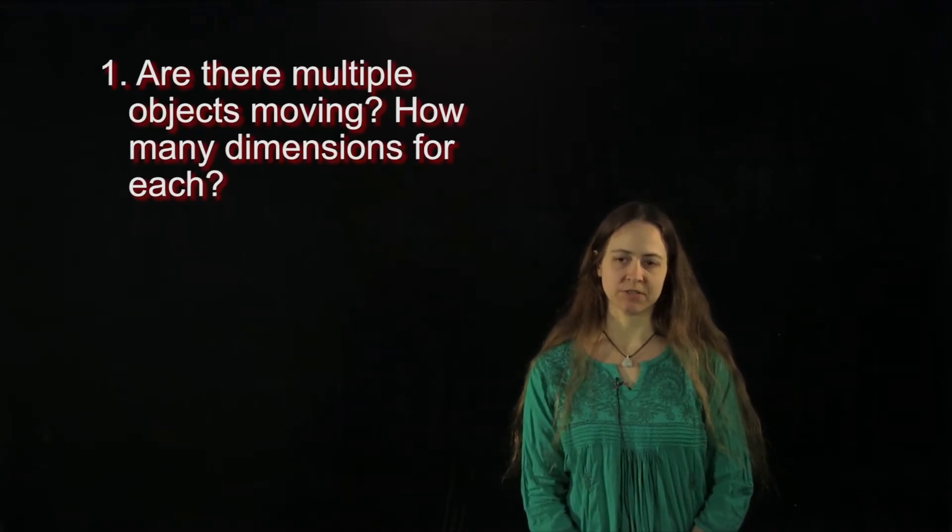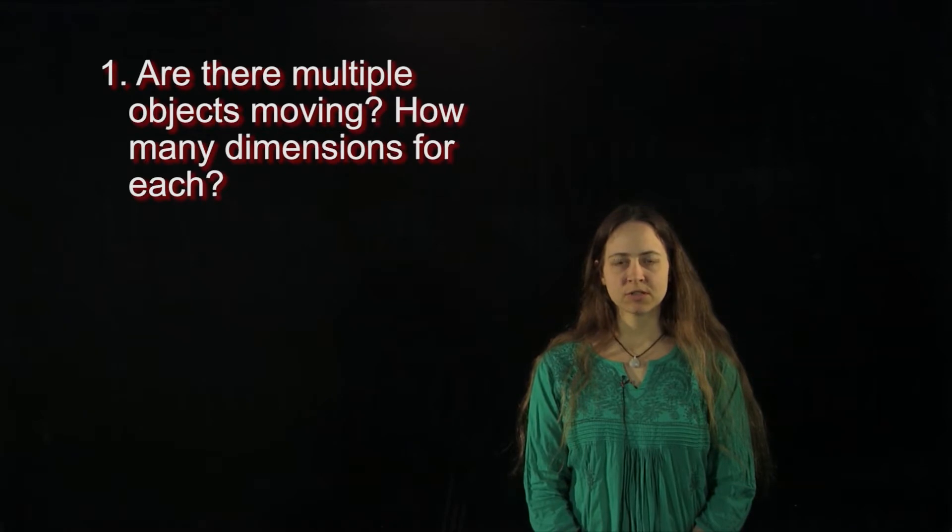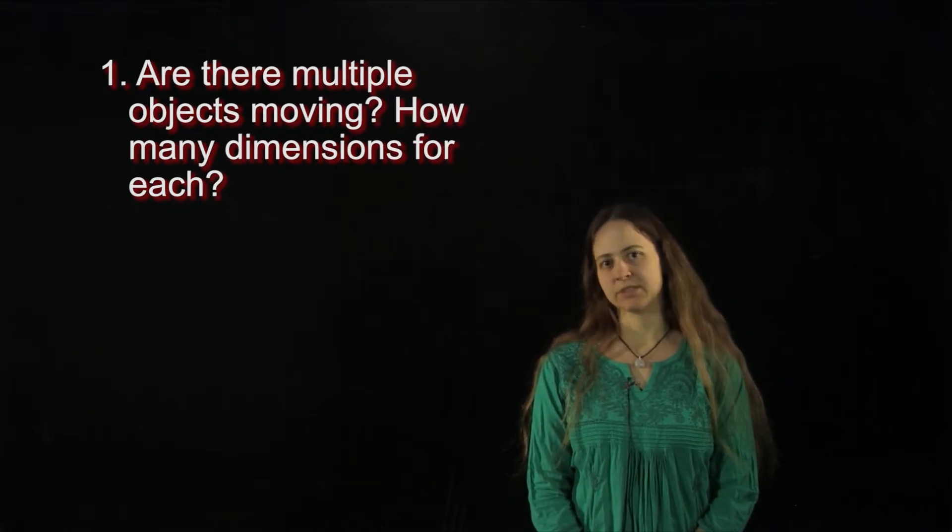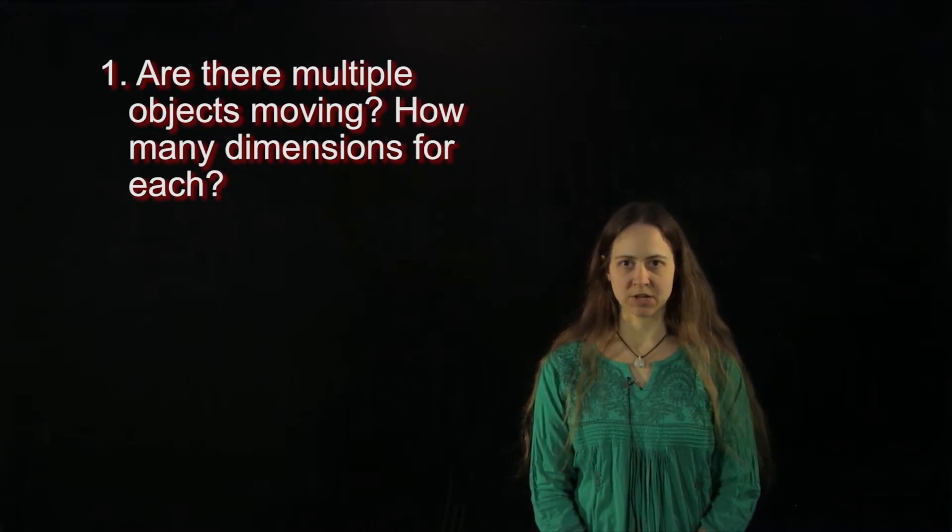The first question we want to ask is: how many objects are moving? Do we care about more than one object? If we do, we need to label each one distinctively. We also want to know how many dimensions we need to care about for each object.